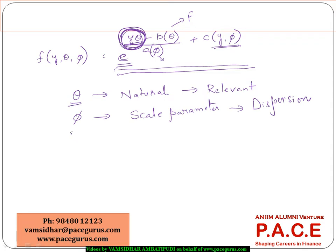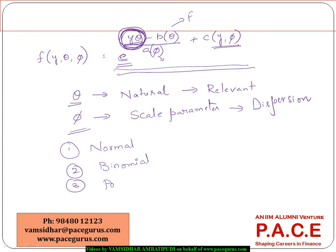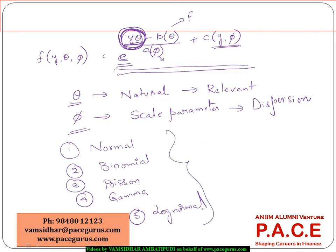Distributions like normal, binomial, Poisson, gamma, and even log-normal all fall under the category of exponential family distributions. We can try seeing in each of these cases how we go ahead and how we can say that these all belong to an exponential family of distributions.